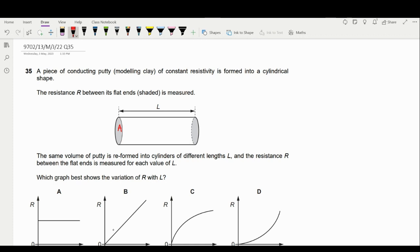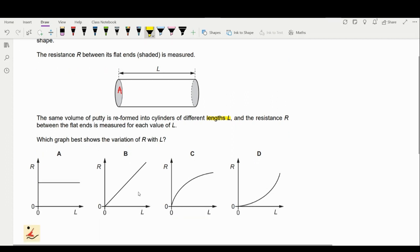The same volume of putty is reformed into a cylinder of different length. In this question, we are changing the length of your clay. The resistance R between the flat ends is measured for each value of length. Which graph best shows the variation of R with L?